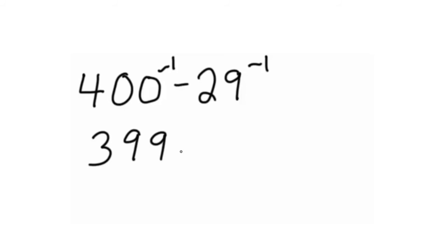Here's an example of using compensation with subtraction. 400 minus 29. We can take 1 from the 400, so 400 minus 1 is 399, and 29 minus 1 is 28. Subtracting 399 minus 28 gives us 371.